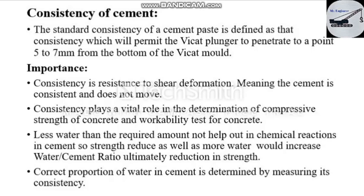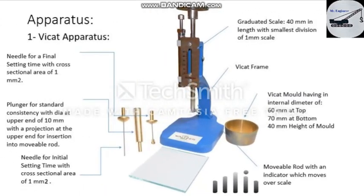The strength of our cement depends upon the consistency value. More or less water than the recommended amount will result in reduction of strength. For example, less water than required will not help out in the chemical reactions. Similarly, if we add more water, the water-cement ratio increases and ultimately strength reduces.